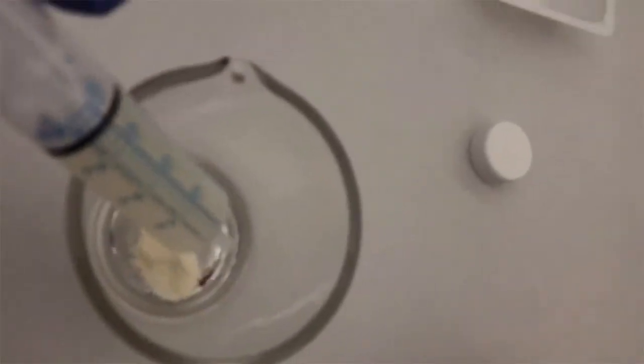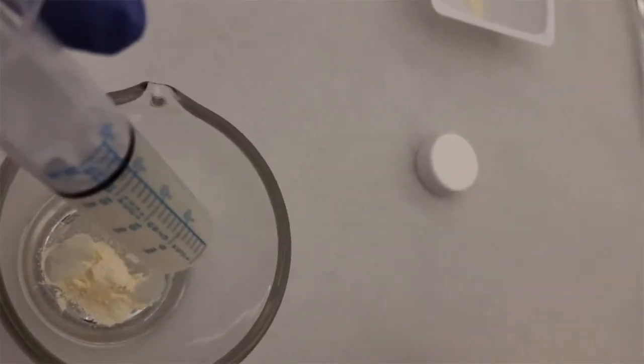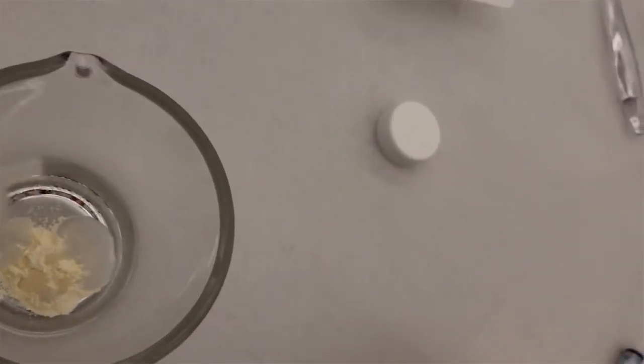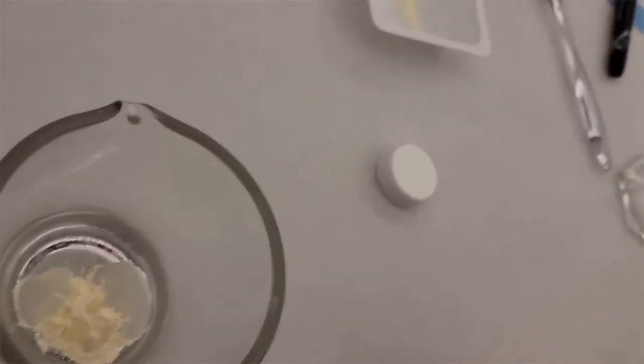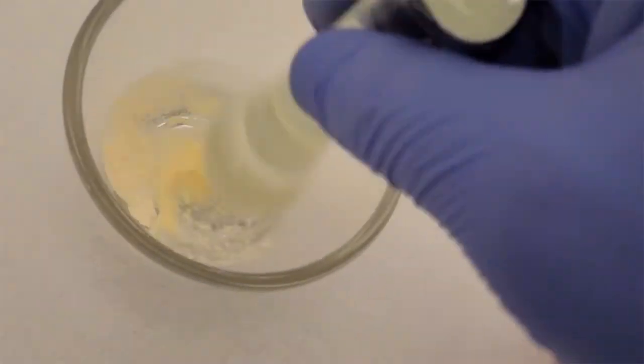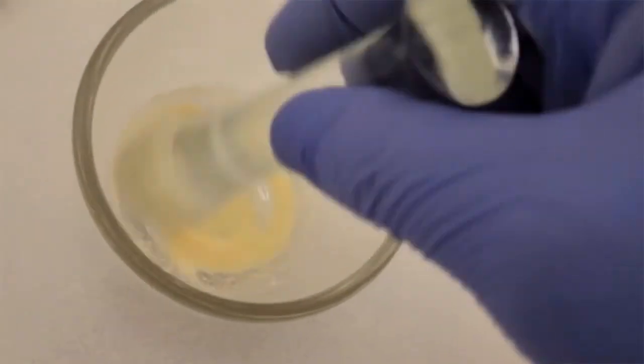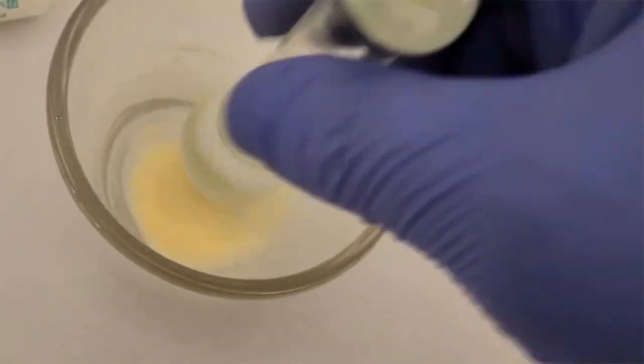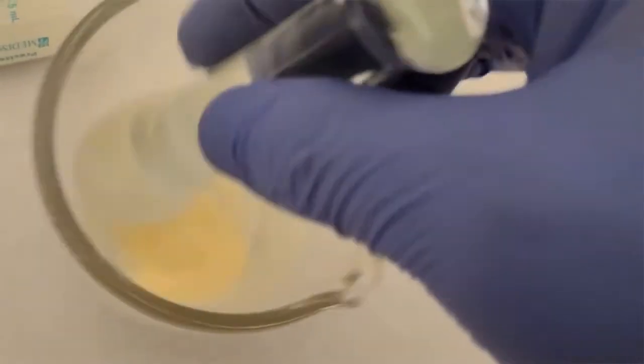So what we're doing here is we are adding a small amount of that suspending vehicle. You don't want to add all of it because the particles will start to float and you're not going to be able to levigate them. So I'm levigating them. Remember, I'm making them into a paste with a liquid that doesn't dissolve them. So notice that I'm making it into this paste. I'm trying to get rid of those big chunks.